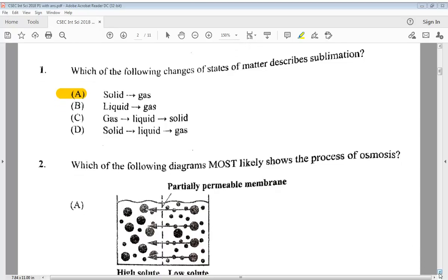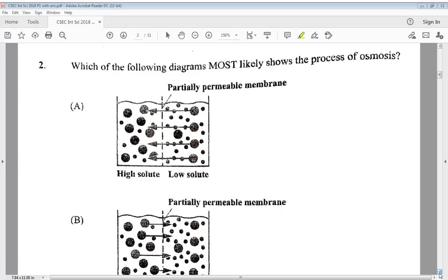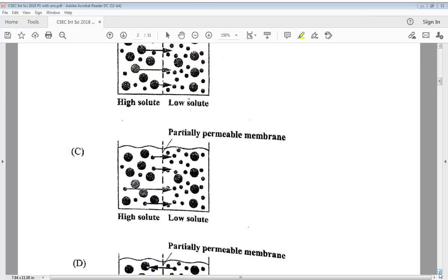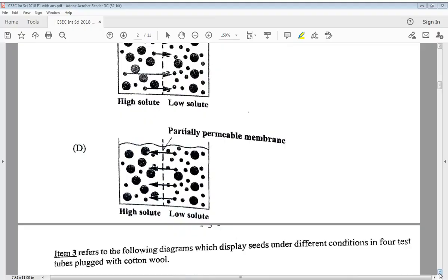Two says, which of the following diagrams most likely shows the process of osmosis? Let's examine them. Looking at A, we clearly do not see the process of osmosis there. Let's look at B. Neither is it taking place at B. Let's look at C. Neither is it taking place at C. Let's examine D. Yes. So D would be our answer.